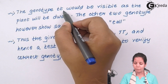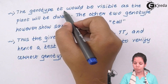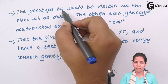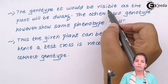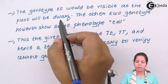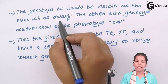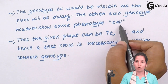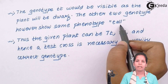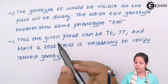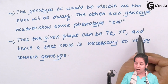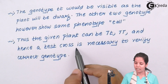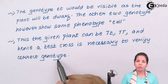The genotype could be capital T small t or small t small t. If the genotype is small t small t, we can see phenotypically that the plant would be short or dwarf. But in the case of capital T capital T and capital T small t, both show the same phenotype — they will both be tall, since capital T is always dominant over small t. So the given plant can be capital T small t or capital T capital T, and hence a test cross is necessary to verify the correct genotype; otherwise we could never reach a conclusion about what the genotype would be.